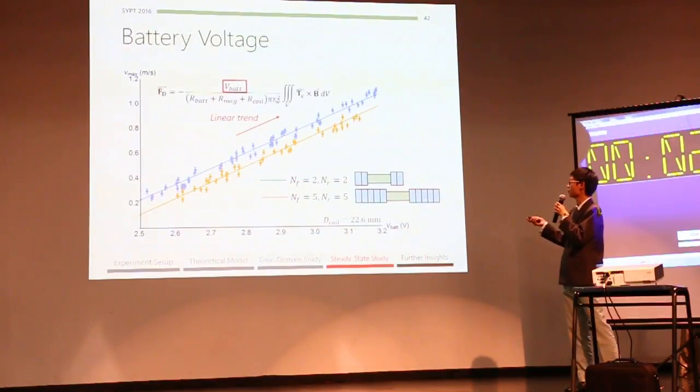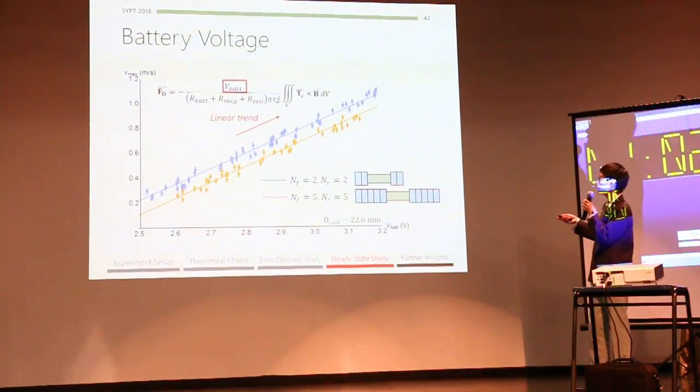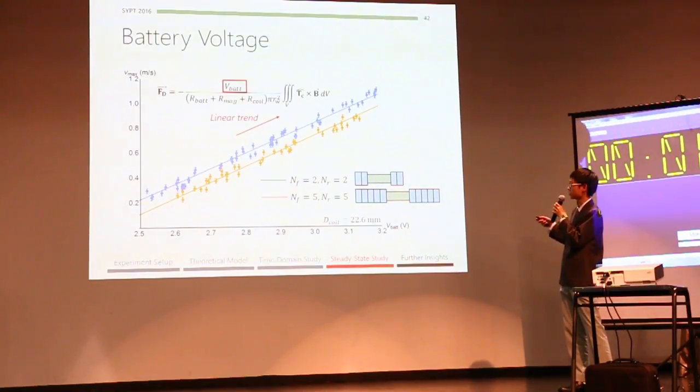Now, as we talk about battery voltage, for the effect of battery voltage, we can see a linear trend between speed and battery voltage. And this is again consistent with our theory, which predicts a linear trend as well.